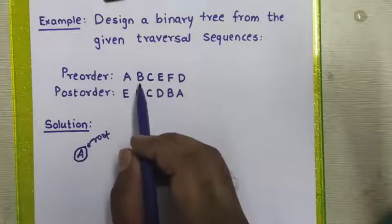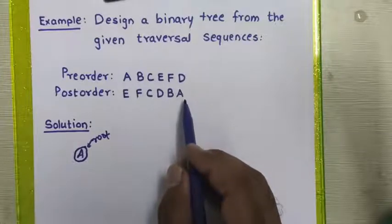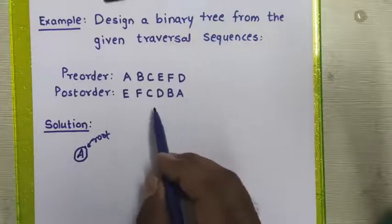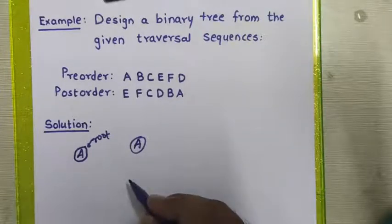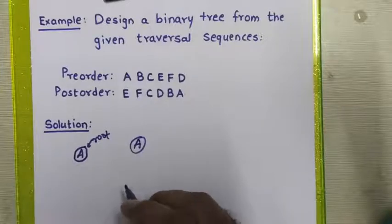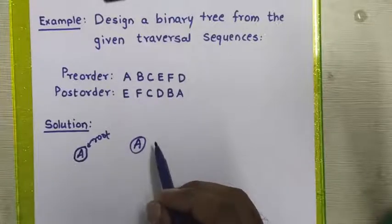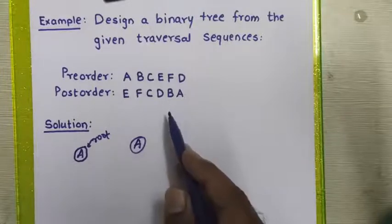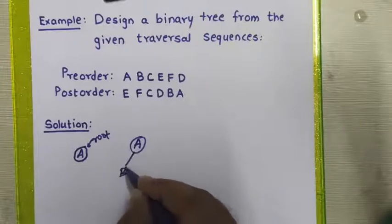To get the next node below node A, we take the next element from the pre-order sequence, which is B. We then go to the post-order sequence and check where node B appears. If it appears before node A, it means it is part of node A and has to be placed below it. The rule says that if a node does not have any left or right child, the incoming element must be placed to the left-hand side. So we place node B to the left of node A.